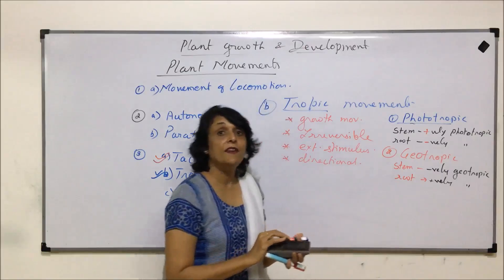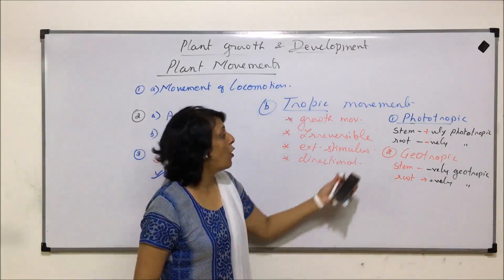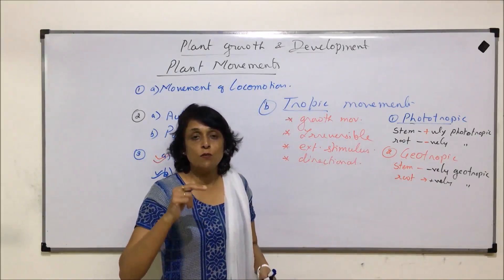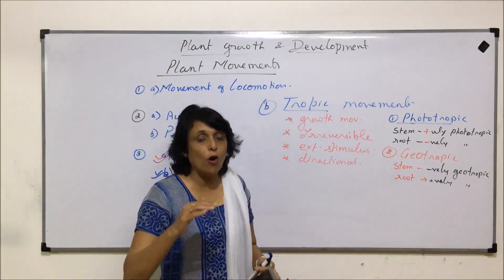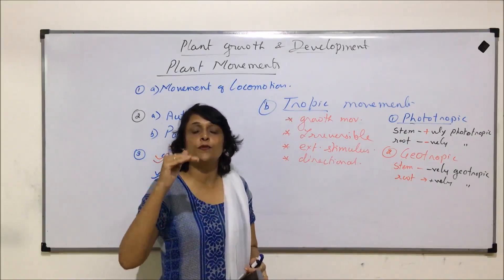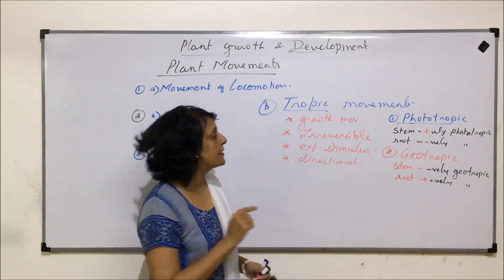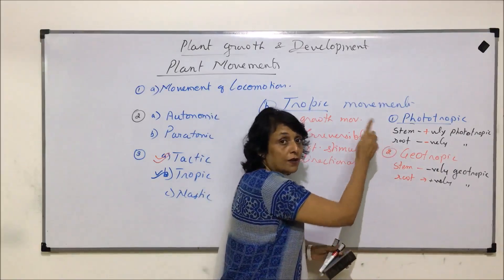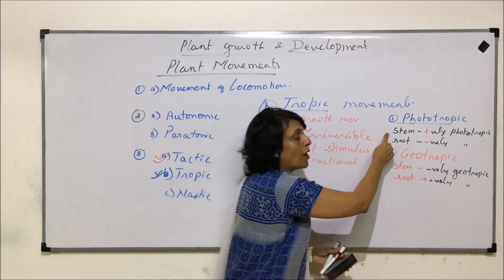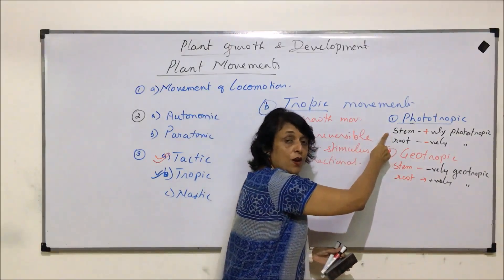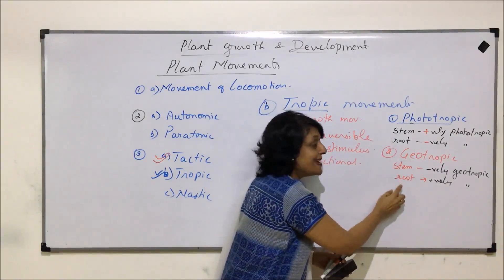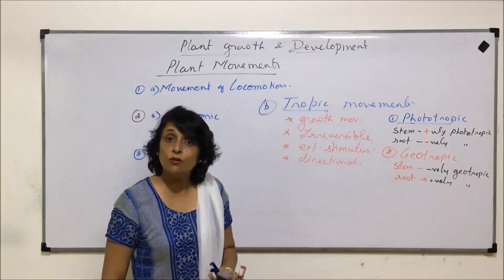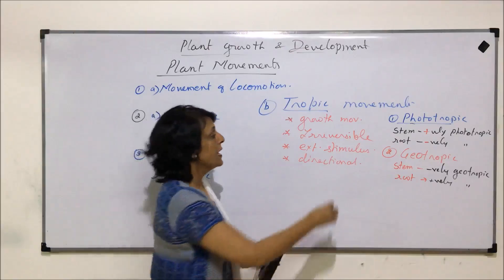Pneumatophores are positively phototropic and negatively geotropic. However, this applies only in case of exceptions. In general, we follow the rule that stems are negatively geotropic and roots are positively geotropic.